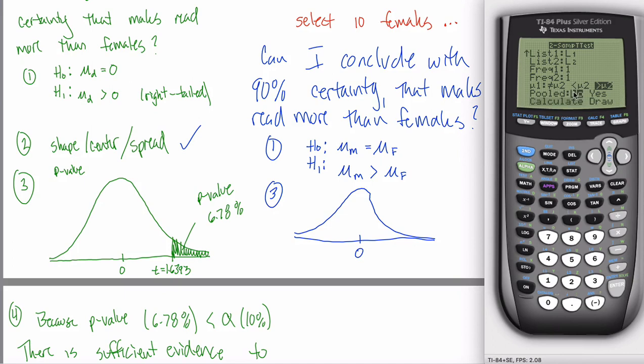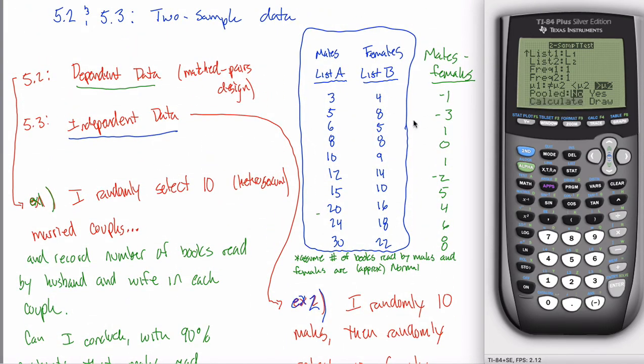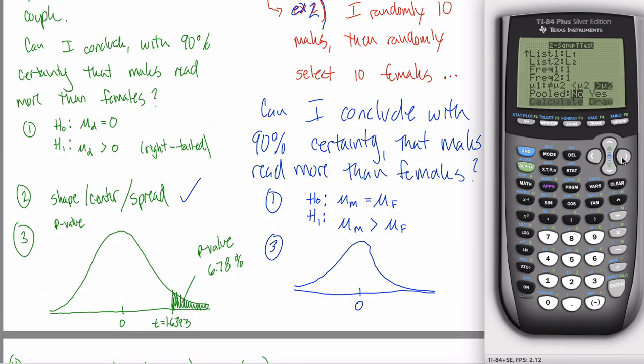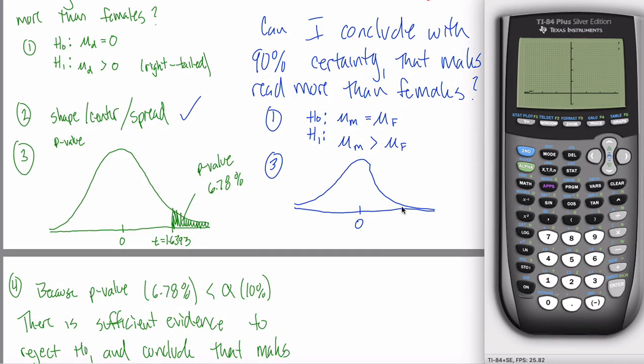It then asks me if my data is pooled or not. This is kind of a little technical thing. The short answer is that we'll always put no for pooled in our class. What it's asking you is the calculator is going to calculate a standard deviation. And it's going to use this data to calculate a standard deviation. And the calculator wants to know, should it put all 20 of these observations together and just calculate that standard deviation? Or should it calculate a standard deviation over here and then another one over here and then kind of blend those together in some sense? And what you have to figure out is, well, is there a reason to believe that the standard deviations of the two groups should be the same? Because if you think the standard deviation should be the same, then yeah, pool it. Absolutely. But we'll never have reason to believe that the standard deviation should be the same. So we'll never pool it. The short answer is always put no in this class. Then you can either calculate or draw. I prefer to draw when I'm doing the p-value method.